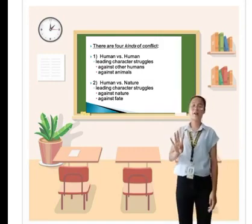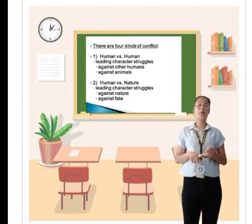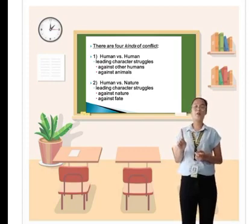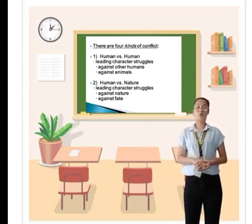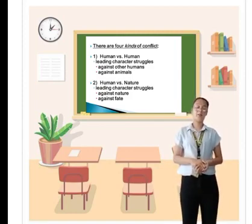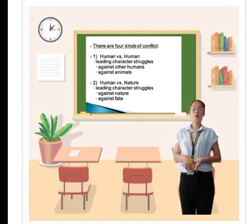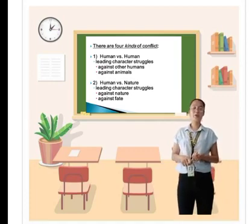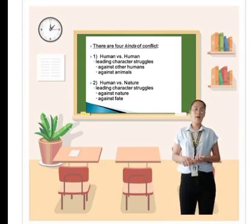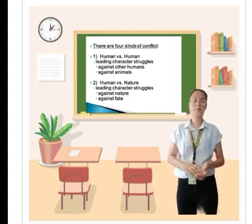There are four kinds of conflict. First one is human versus human, human versus nature, human versus society, and the last one is human versus self. The first one is human versus human. Leading character struggles against other humans or against animals. For example, human versus supernatural being, human versus machine, human versus animal, etc.